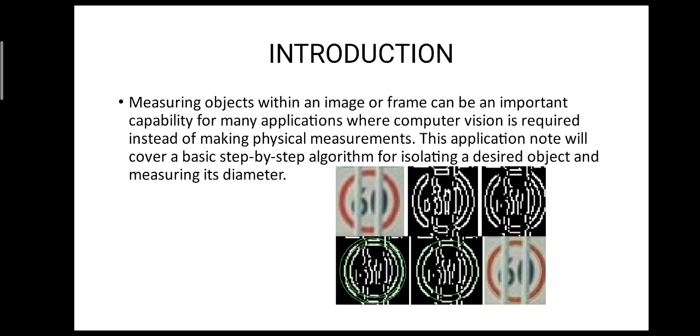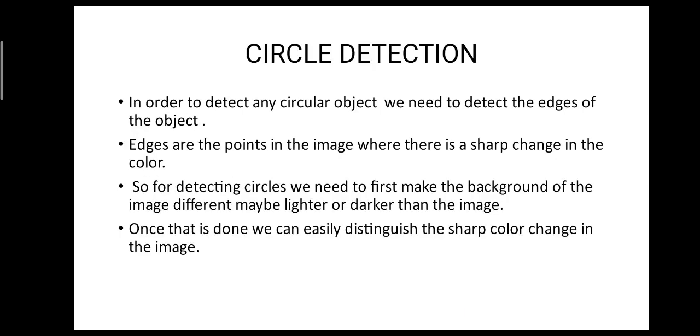So how do we detect a circle? In order to detect any circular object, we need to detect the edges of the object. Edges are the points in the image where there is a sharp change in the color. So in order to detect circles, we need to first make the background of the image different, maybe lighter or darker than the image. Once that is done, we can easily distinguish the sharp color change in the image.